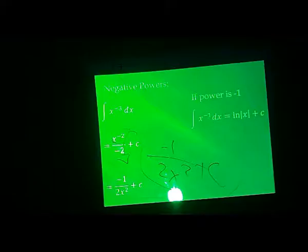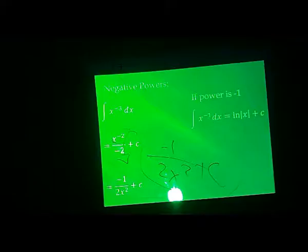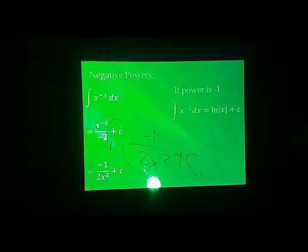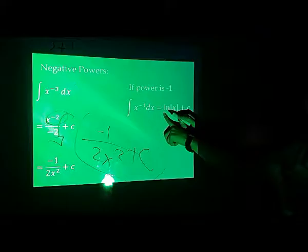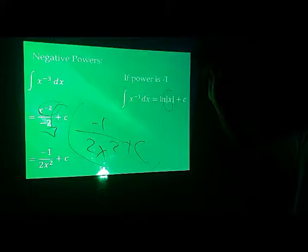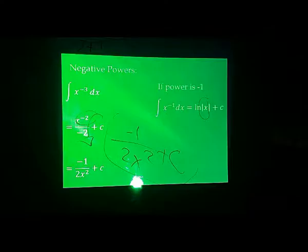Any more questions? We're using the power rule, but here the power is negative 1. It's the same, except here we take the natural number and the absolute value. Unlike earlier where we had numerator and denominator. Okay, any more questions?